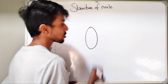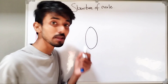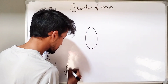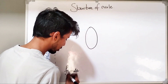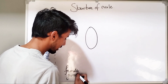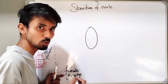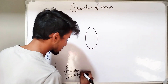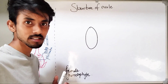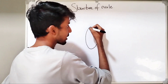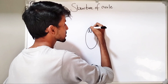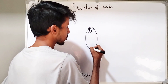The embryo sac is also called as the female gametophyte. Gametophyte is the tissue that is responsible for the development of the gametes — haploid gametes. This is the embryo sac. Inside the embryo sac, we have several structures, which we are going to talk about in another video in detail.